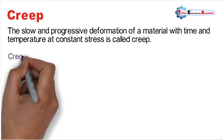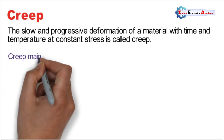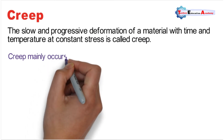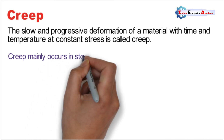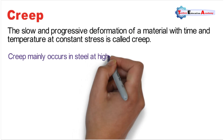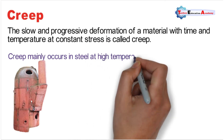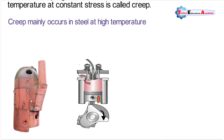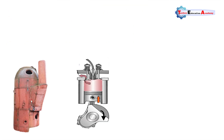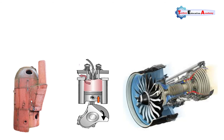The next property is creep. Creep is the slow and progressive deformation of a material with time and temperature at constant stress. Creep mainly occurs in steel at high temperatures. This property is useful in designing components subjected to high temperatures, such as boilers, internal combustion engines, steam and gas turbines, as well as rockets and missiles.